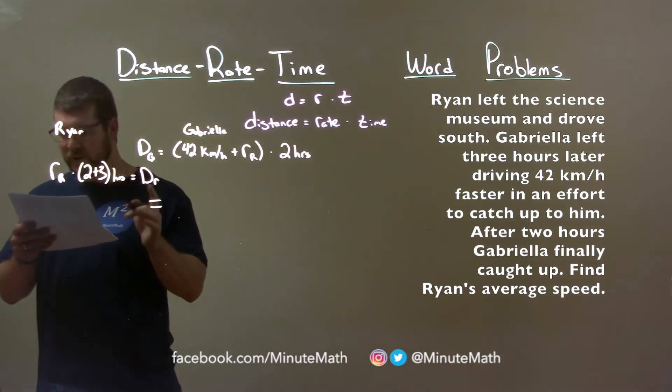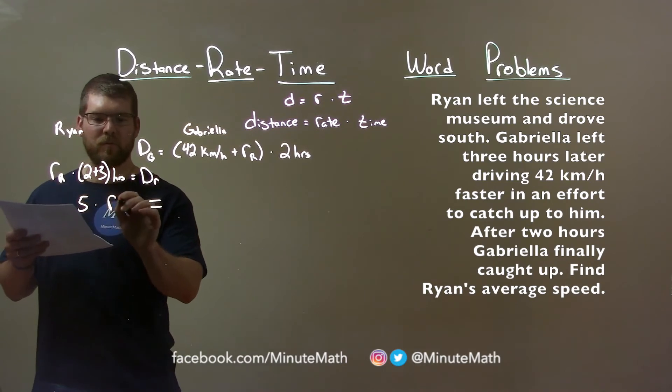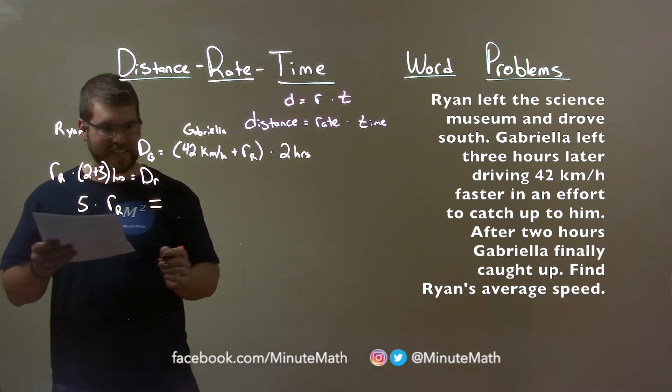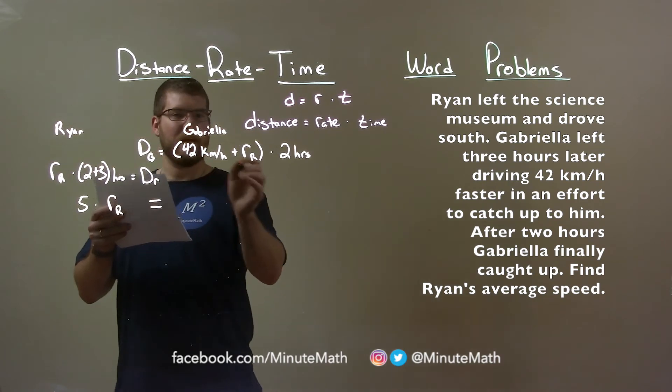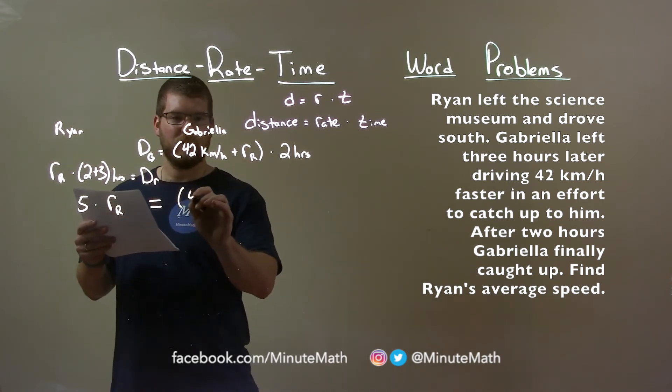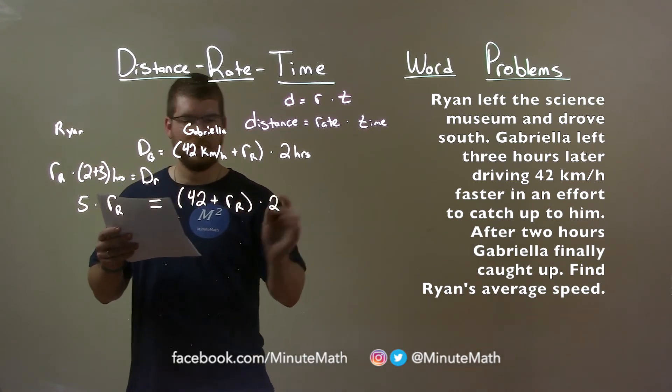Two plus three is five, so we have five times, rewriting this, Ryan's rate, so five times. And now we have 42 plus Ryan's rate times two hours.